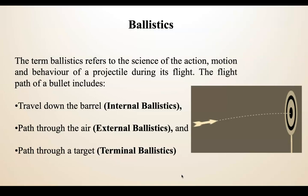In terms of firearms, even a rocket launcher is a firearm, and a missile is a projectile because it travels a certain path through the atmosphere. Ballistics is divided into three main categories: internal ballistics, external ballistics, and terminal ballistics.